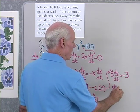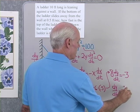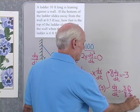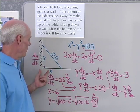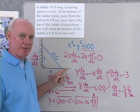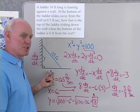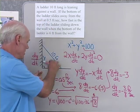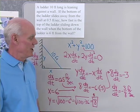Dividing both sides by 8: dy/dt is equal to negative 3 eighths feet per second. So if this 10-foot ladder is leaning up against the wall and sliding away from the wall on the ground at half a foot per second, then the rate at which it's coming down the wall when x equals 6 feet is negative 3 eighths feet per second. That negative sign tells us that the distance y is getting smaller — so negative 3 eighths feet per second.